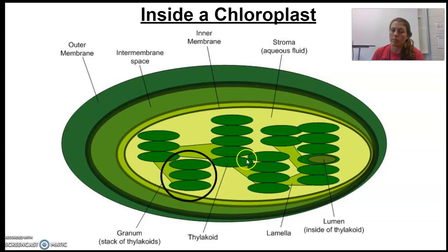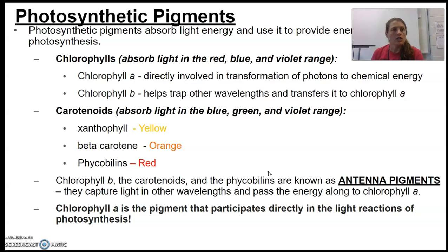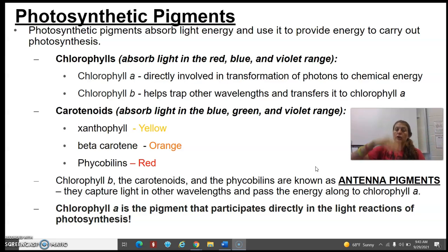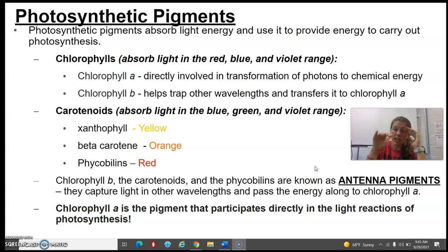Big takeaways: make sure we know thylakoid, granum, and stroma. Dotted all over those thylakoids are photosynthetic pigments. Photosynthetic pigments absorb light energy to provide the energy to carry out photosynthesis — this is our initial input of energy that we see throughout all of our cycling. We've always got to have an input of energy, and it's coming from the sun.